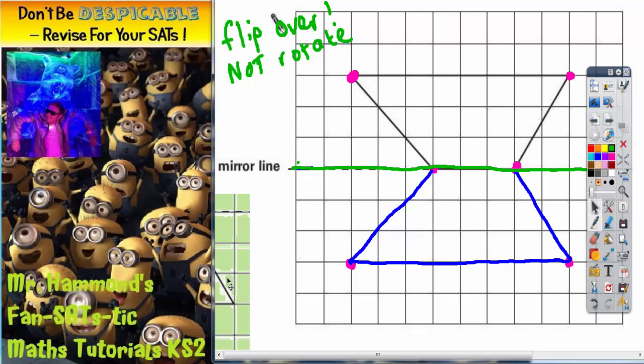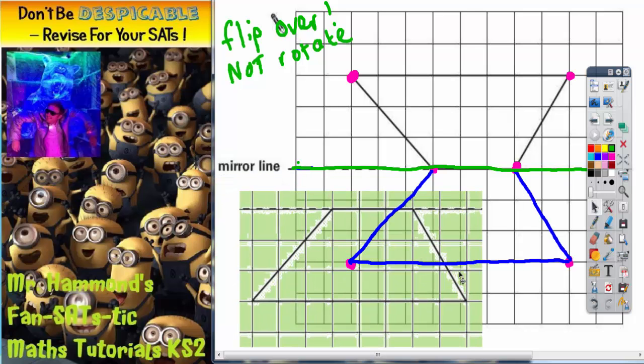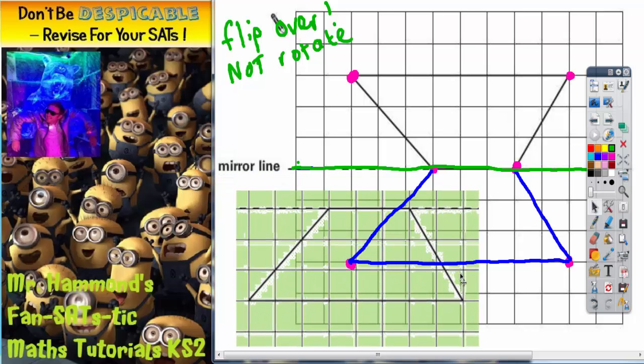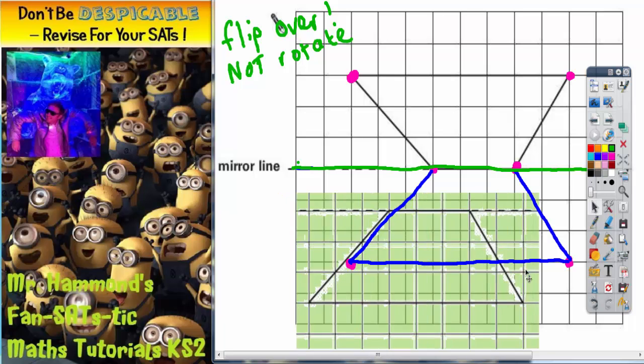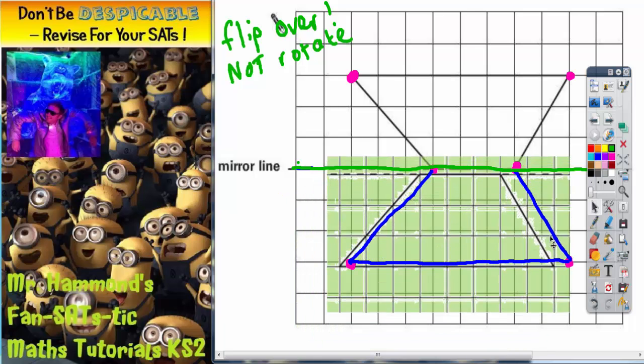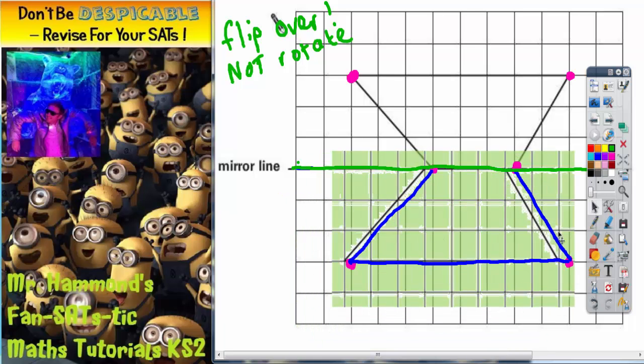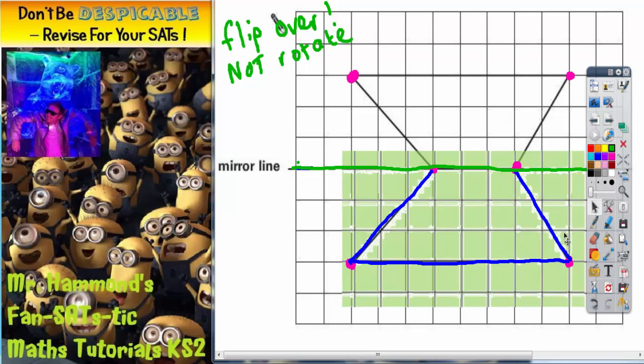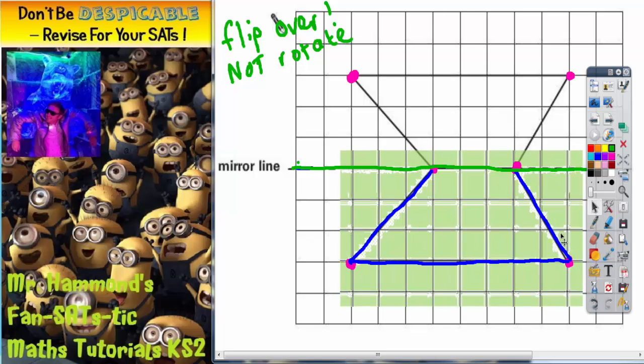So once you've flipped it over bring your tracing paper in here and replace the mirror line that you've traced back over the original mirror line like this and then just line the two shapes up.